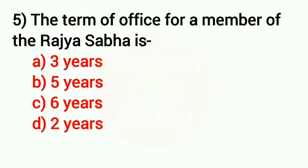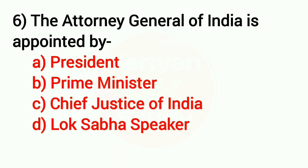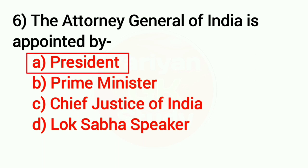Question number 5: What is the term of office for a member of the Rajya Sabha? Answer: Option C — six years. Question number 6: The Attorney General of India is appointed by whom? The correct answer is Option A — the President.